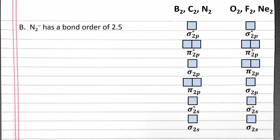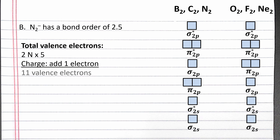To calculate bond order, we first need to fill in the molecular orbital diagram. Let's calculate the number of valence electrons. Each nitrogen has 5 electrons in the second shell according to its position in the periodic table. The 1− charge adds 1 electron, so we have a total of 11 valence electrons. We fill in the molecular orbital diagram starting with the lowest energy molecular orbital and working our way up. Two electrons go first into the σ2s bonding molecular orbital, then two electrons in the σ2s antibonding molecular orbital, then four electrons to fill up the two π2p bonding molecular orbitals.